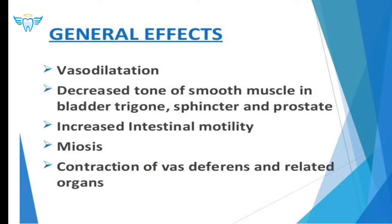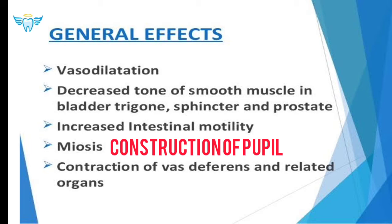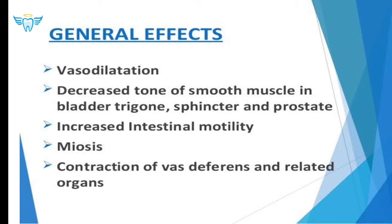The general effects of alpha blockers include vasodilatation — the opposite of the sympathetic vasoconstriction — decreased tone of smooth muscles in the bladder trigone, sphincter, and prostate, which is why we prescribe alpha blockers for benign prostatic hyperplasia. They also increase intestinal motility, cause miosis, and affect contraction of the vas deferens and related organs.